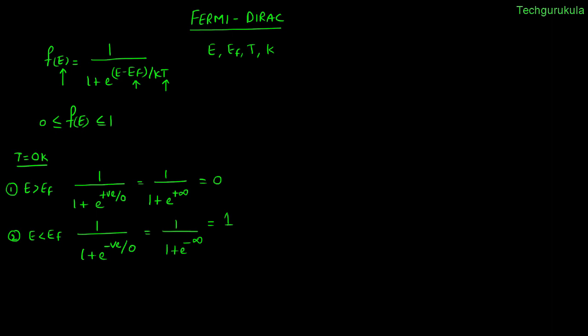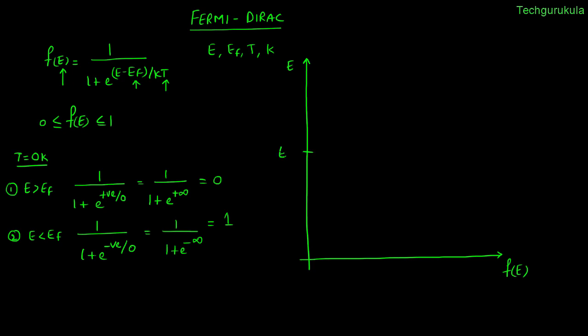Let us plot these values on a graph, with energy level E on the y-axis and f(E) on the x-axis. EF is marked at some point, and f(E) values lie between 0 and 1. For T = 0 Kelvin, f(E) = 0 for E > EF and f(E) = 1 for E < EF. This step-function graph represents T = 0 Kelvin.